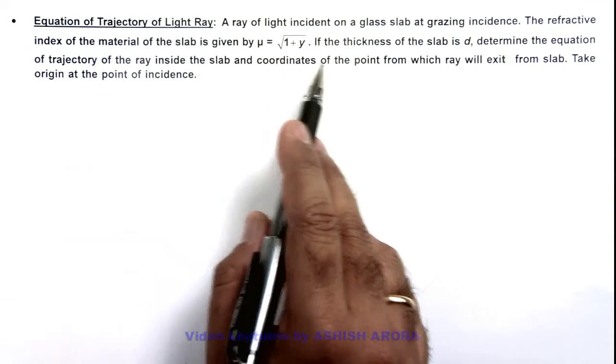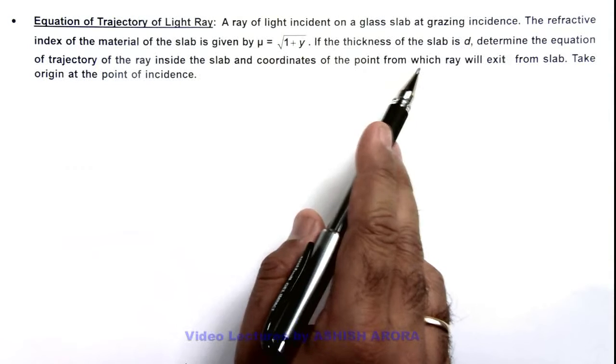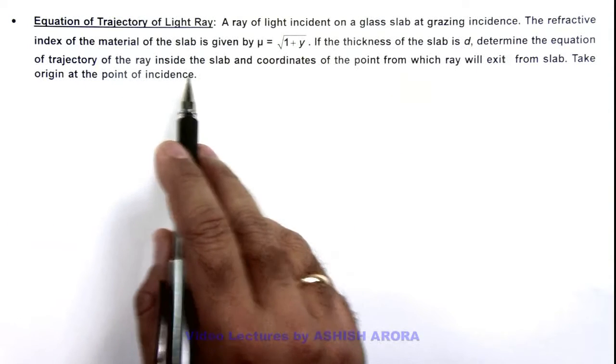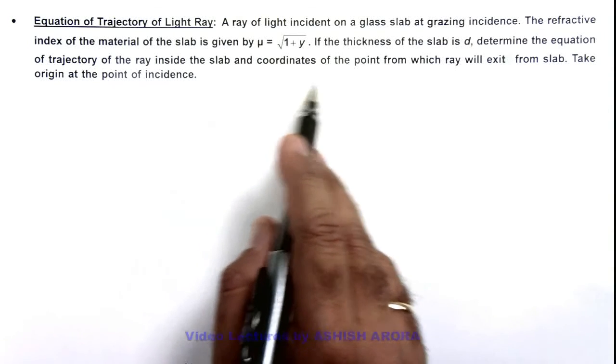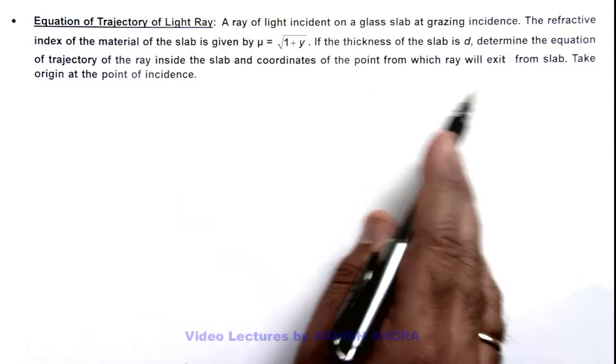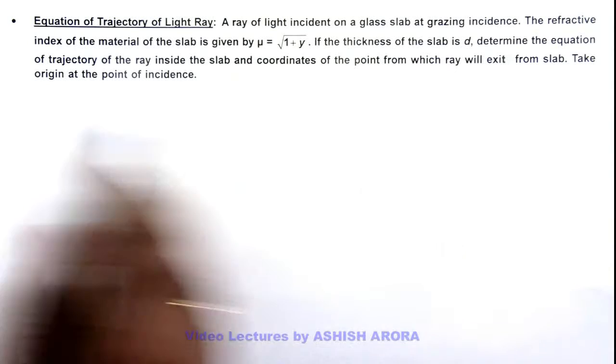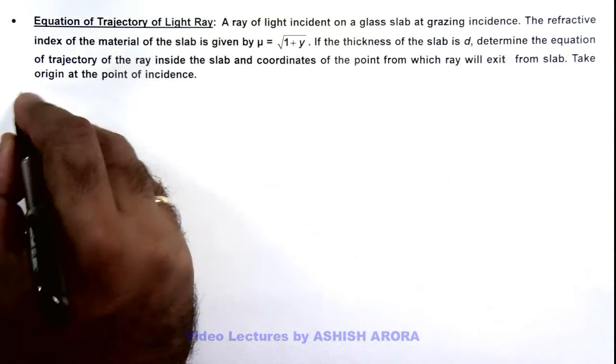If the thickness of the slab is d, we are required to determine the equation of trajectory of ray inside the slab and coordinates of the point from which the ray will exit from slab. We are given to take the origin at point of incidence.